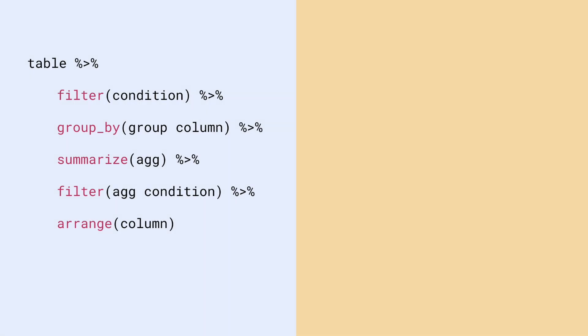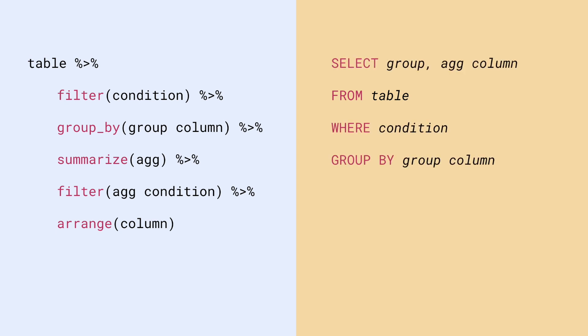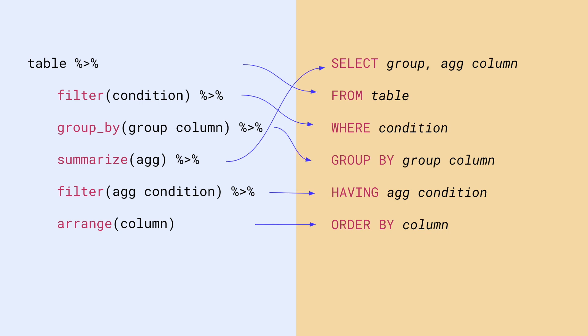If you're used to R, you know that you kind of write things out in the order that they happen. So let's say I have a table, I filter by some condition, group by a column, get a summarized aggregate column, then filter by that column, and then arrange by something. If I were to write this out in SQL, I would start with the table, the condition, group by — but then the select or summarize jumps all the way up to the top, having is at the bottom again, order by is also at the bottom. So you have to remember that the ordering is a little different; you don't necessarily write things in the order you would do them. But it's something you get used to fairly quickly.